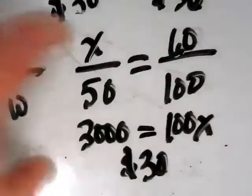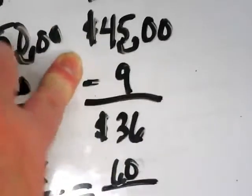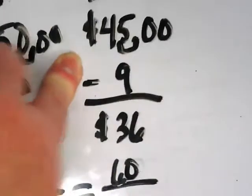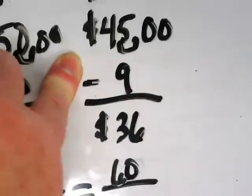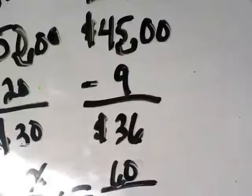I want you guys to do this method for the other problem, the $45 20% off. See if you can find it the same way. If it's 20% off, how much are you going to pay? What's the other part of 100 from 20? 80.